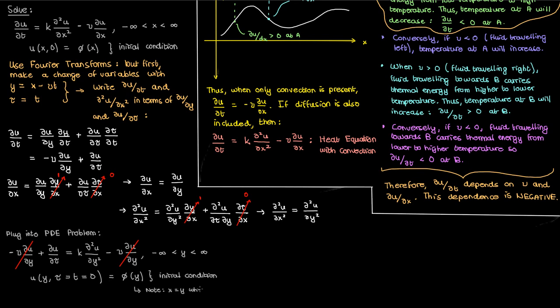Since at tau equals 0 t is 0 and when t is 0 y equals x minus vt would just become y equals x. So at this stage we've now got a simple heat equation on an infinite domain with one initial condition.